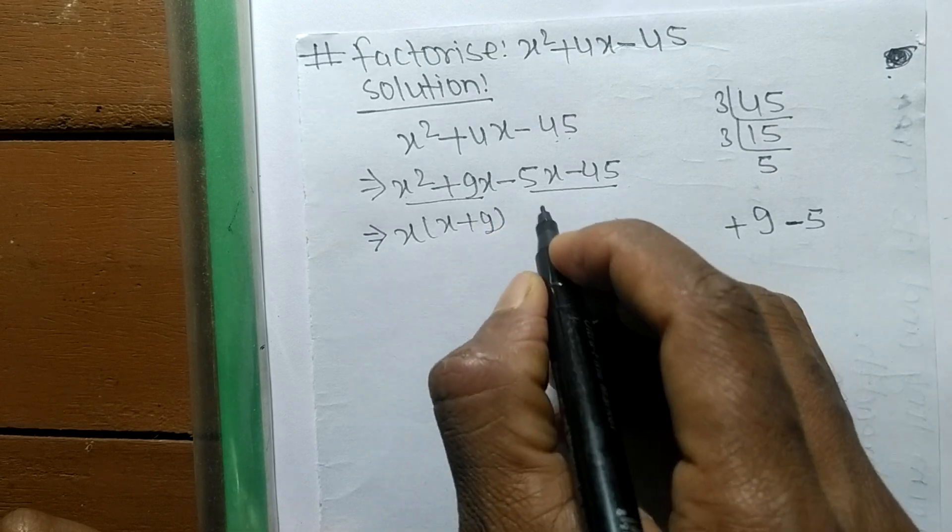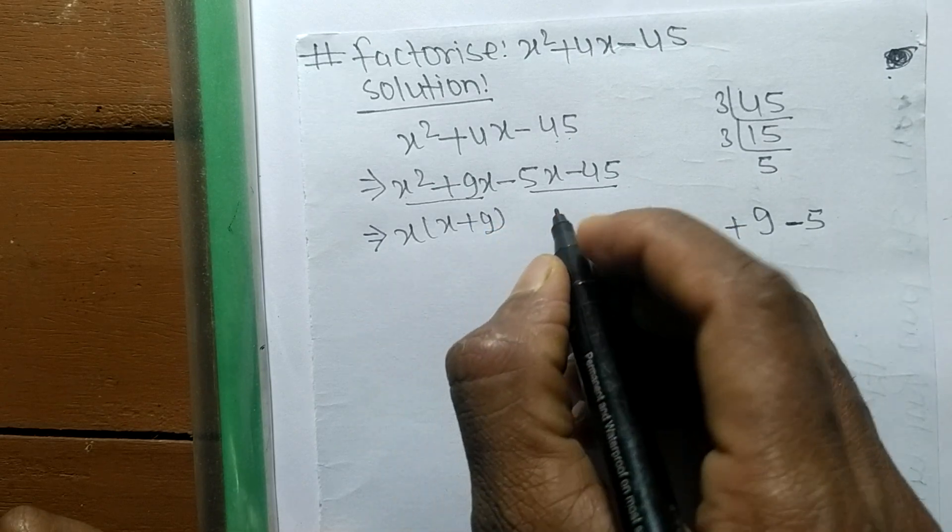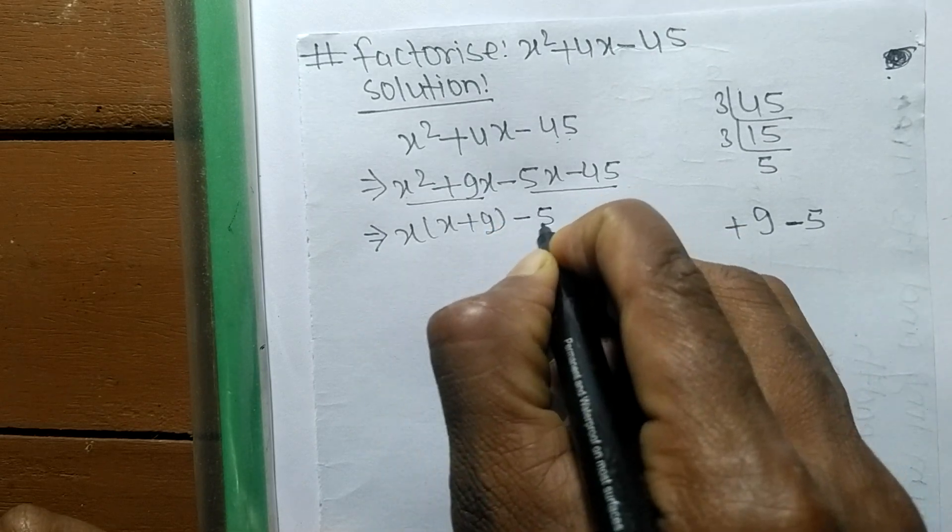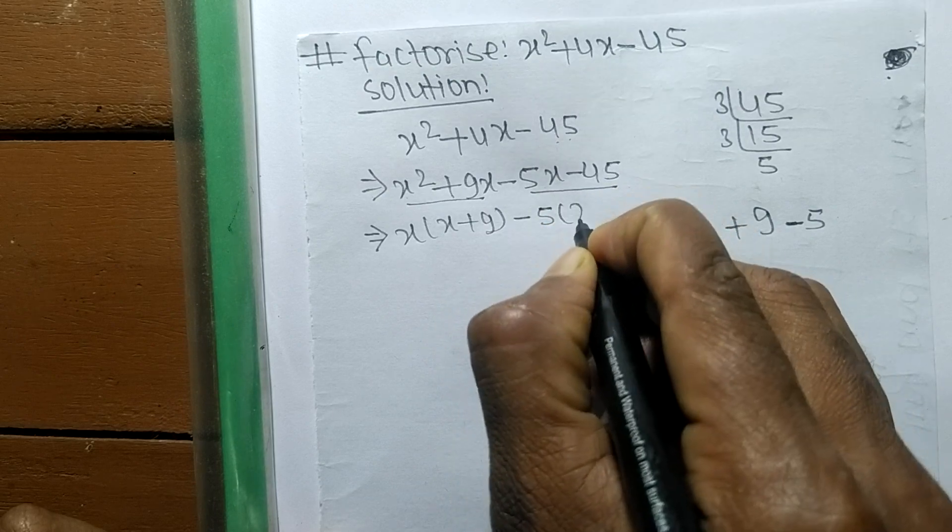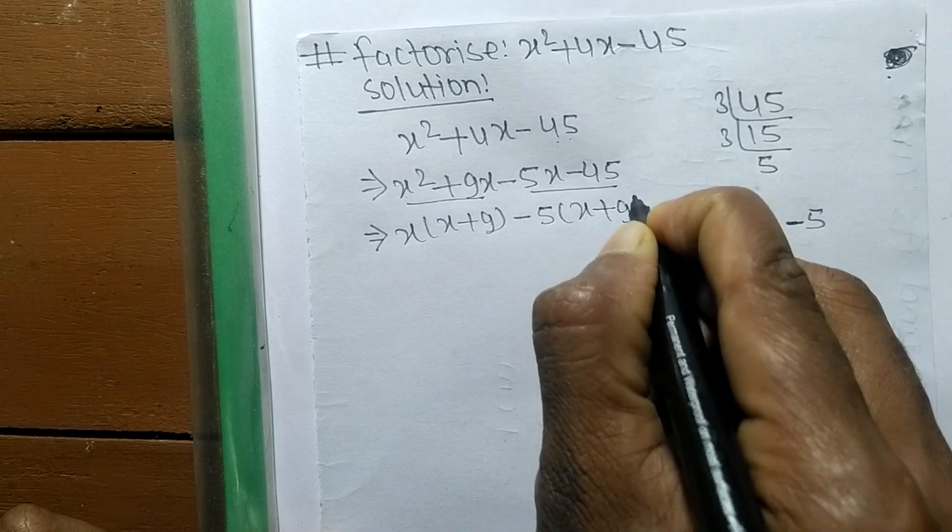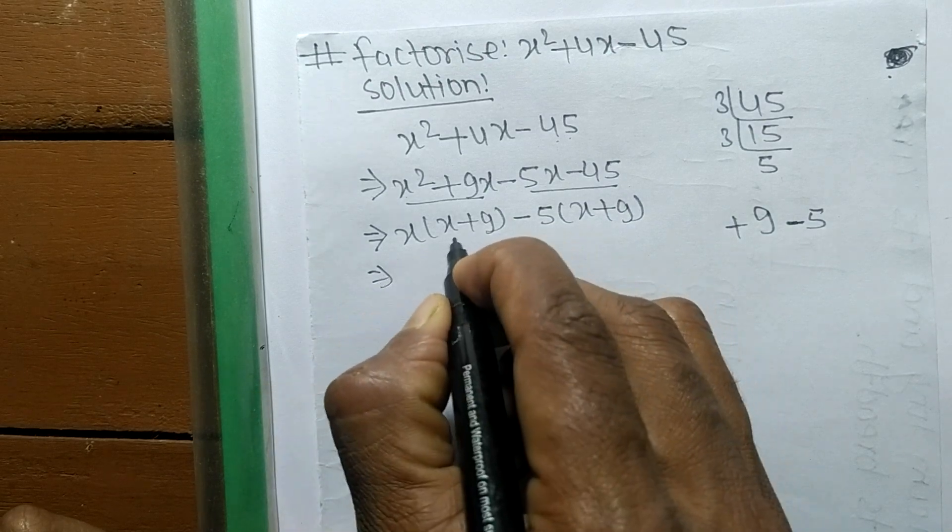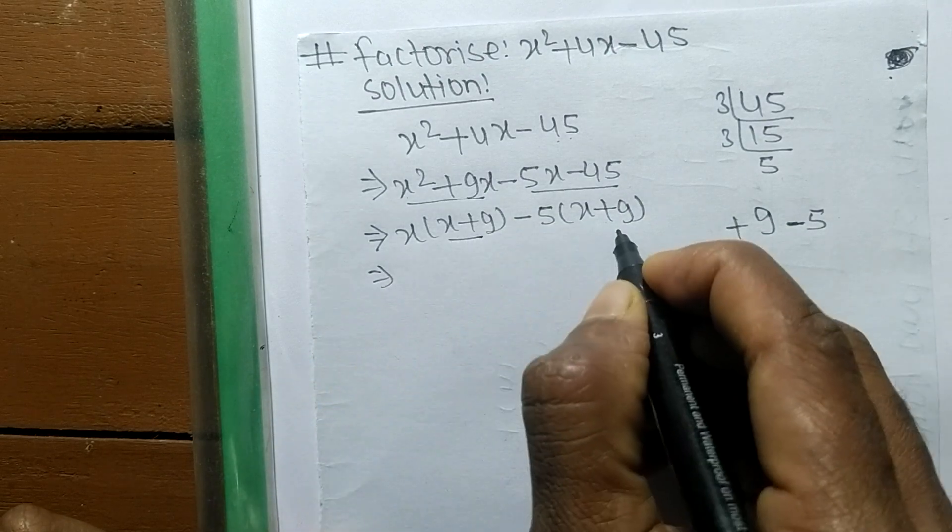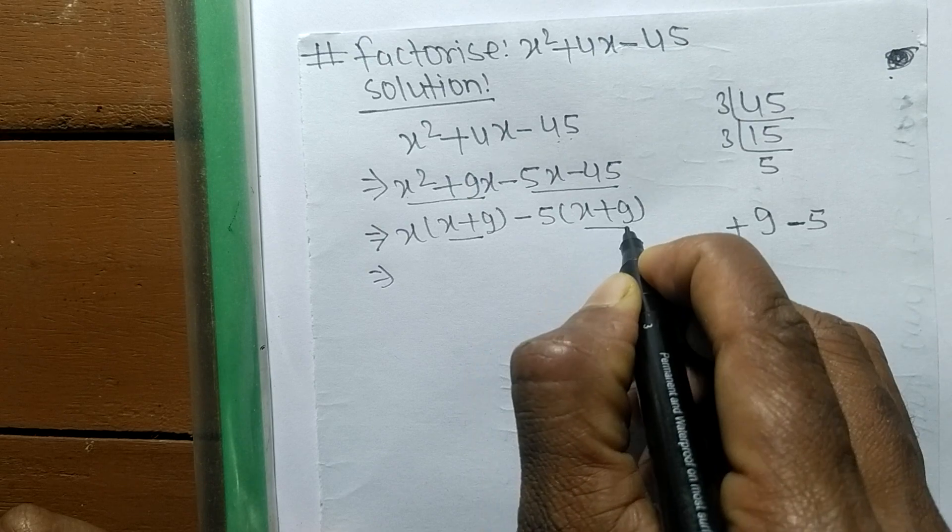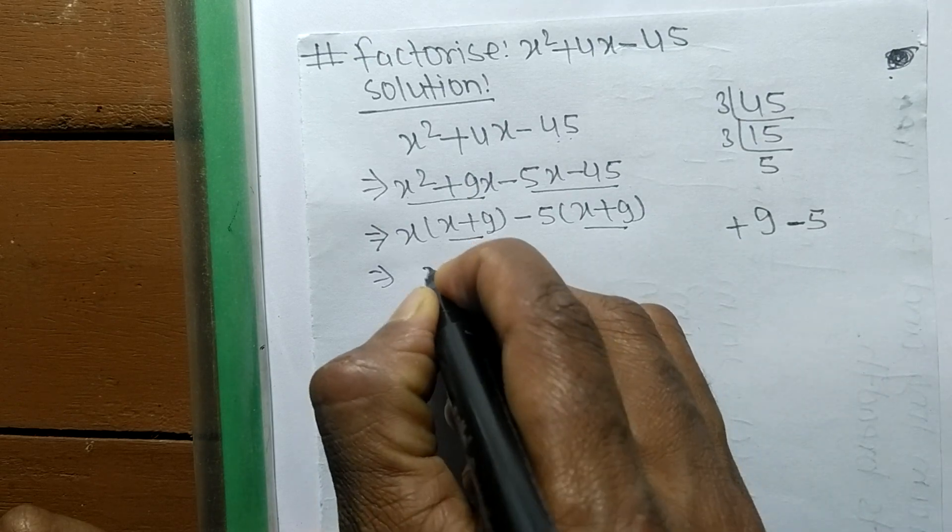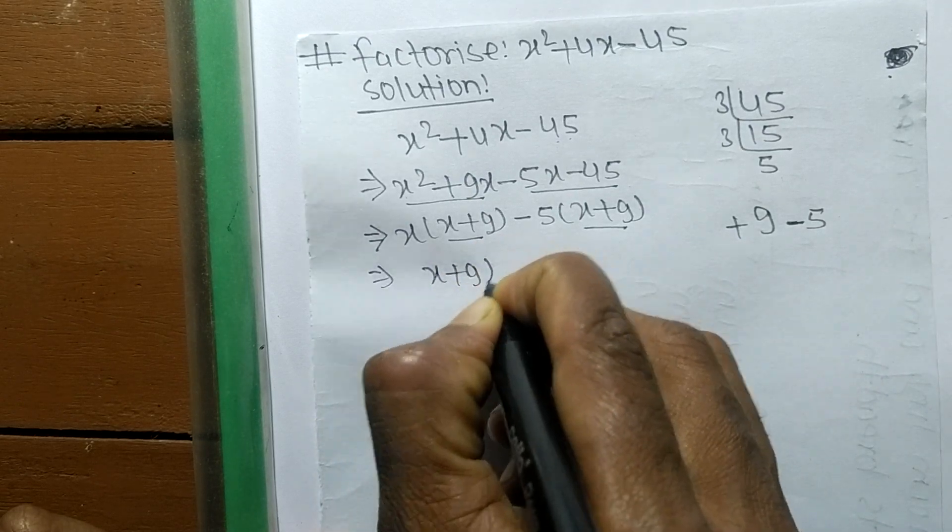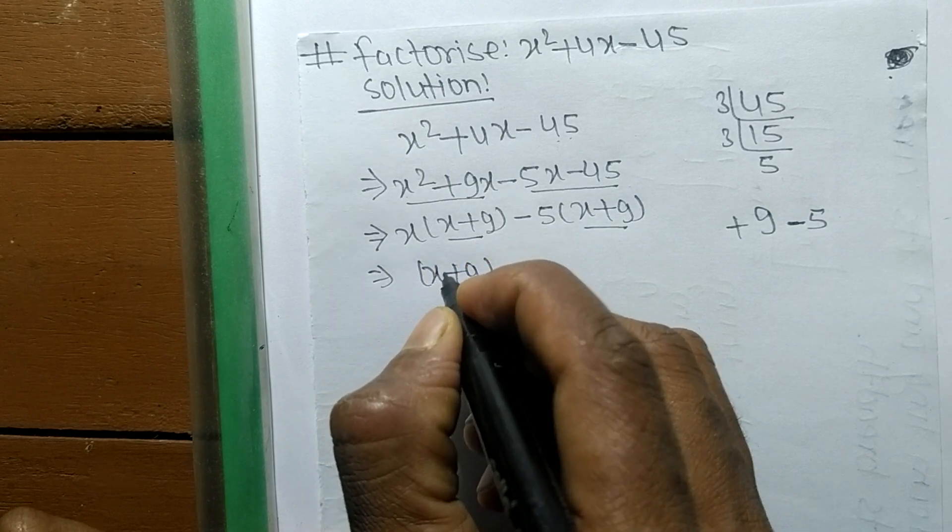So the remaining is x + 9. In first there is x + 9, and in second also there is x + 9. So x + 9 is the common here.